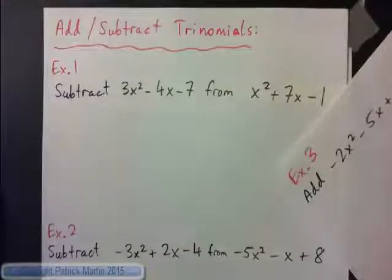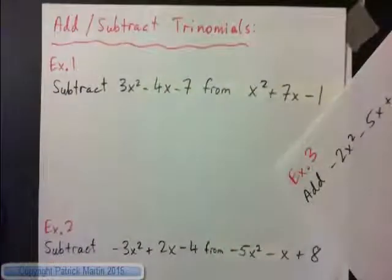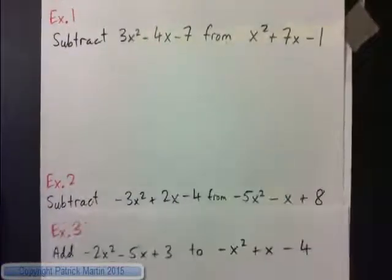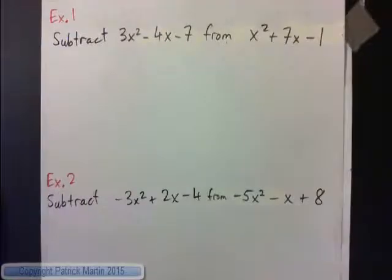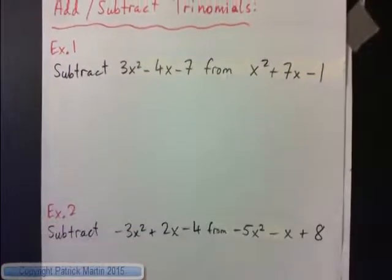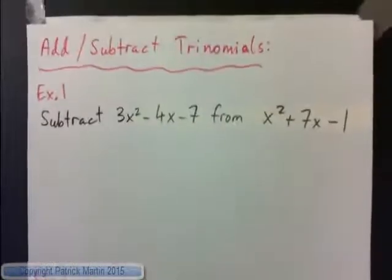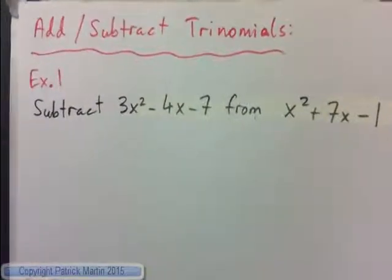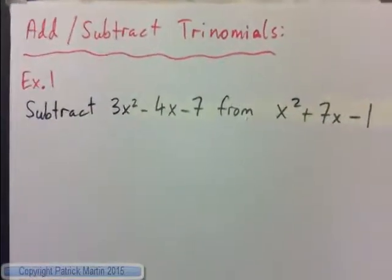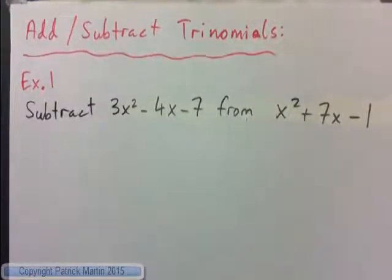In this video, we're going to add or subtract trinomials. We'll do Example 1, Example 2, and Example 3. So let's start with Example 1. Please write it down. We've got to subtract 3x squared minus 4x minus 7 from x squared plus 7x minus 1.